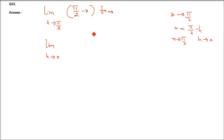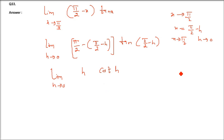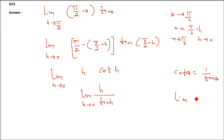So limit h tends to 0: (π/2 - x) becomes π/2 - (π/2 - h) = h. And tan(π/2 - h) = cot(h) = 1/tan(h). So we get h/tan(h), which gives us limit h→0 of h/tan(h) = 1. Since limit of tan(θ)/θ as θ→0 is 1, the answer is 1.